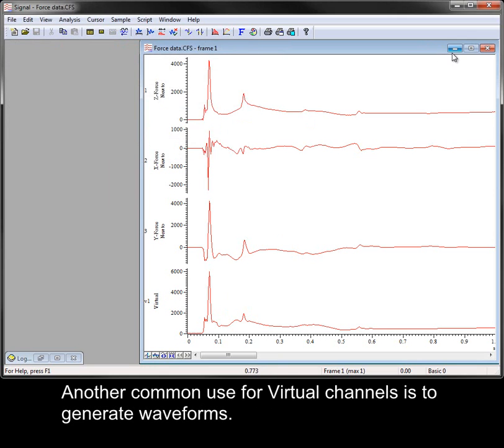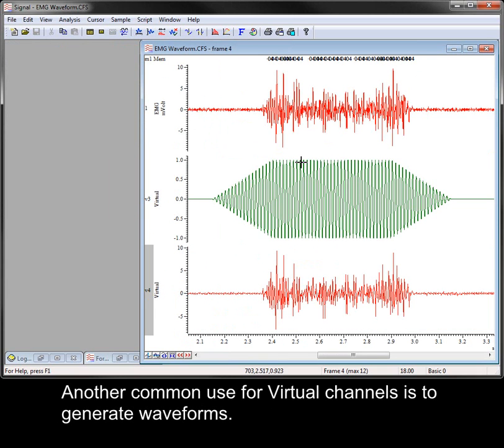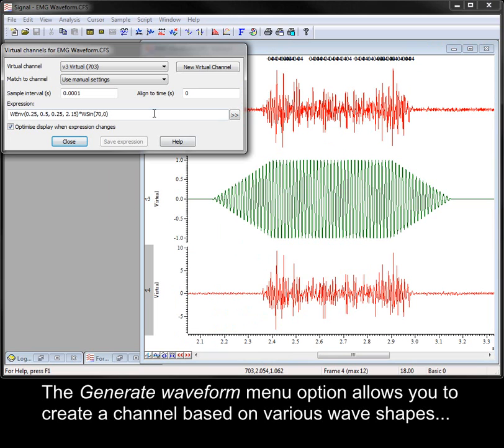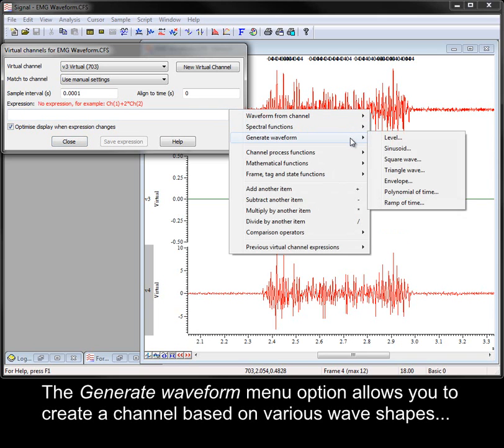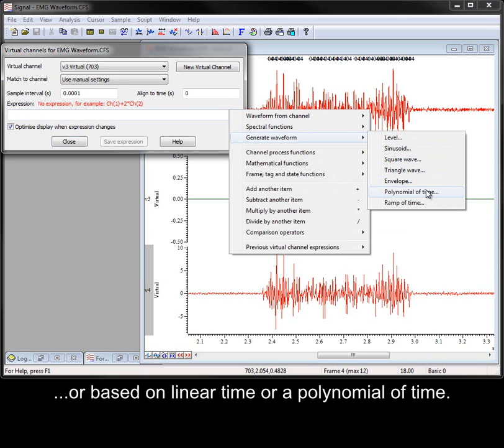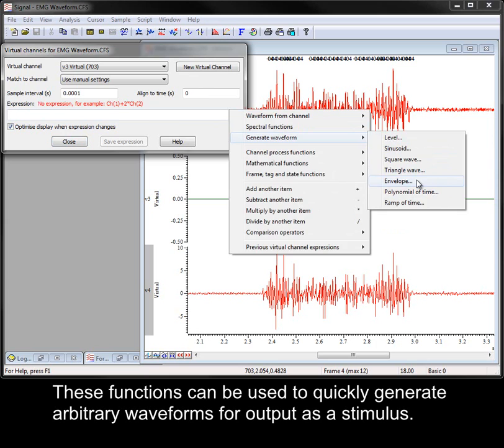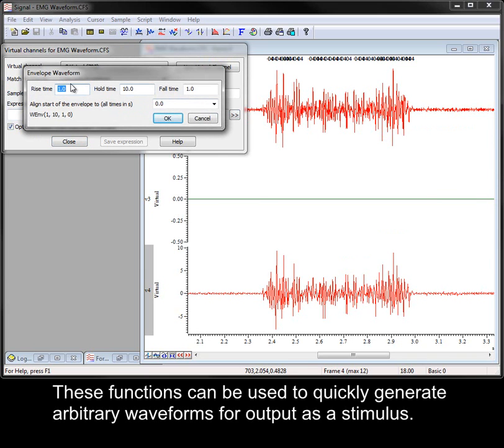Another common use for virtual channels is to generate waveforms. The generate waveform menu option allows you to create a channel based on various wave shapes or based on linear time or a polynomial of time. These functions can be used to quickly generate arbitrary waveforms for output as a stimulus.